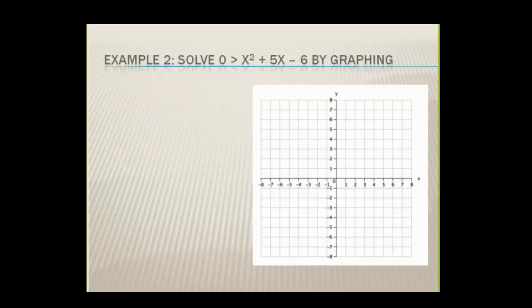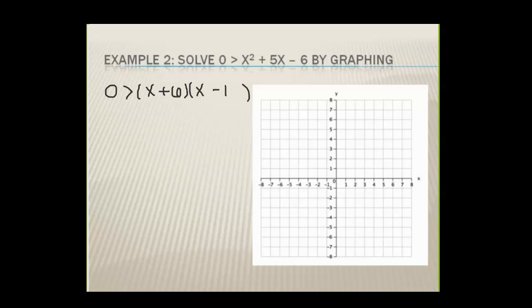Let's look at another graph. This graph is different from the graphs yesterday and what you did on your homework — on your homework you had y values which meant you shaded the entire region inside. Now we're saying y equals zero, which means we can only shade on the number line where y equals zero, which is the x-axis. Factor the quadratic: factors of six that sum to five are positive six and negative one, so the roots are at negative six and positive one. You get open circles because this is greater than but not equal to.